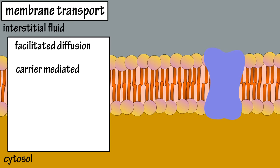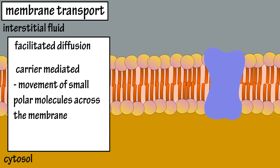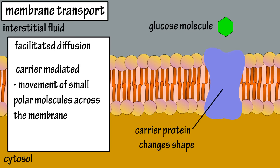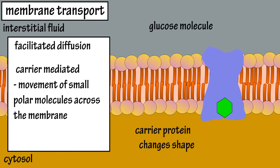Carrier-mediated diffusion involves the movement of polar molecules, such as simple sugars or simple carbohydrates and amino acids, across the membrane. This is accomplished by a carrier protein, which actually changes shape in the process. For instance, glucose binds to a carrier protein, which changes shape and moves the glucose molecule to the other side of the membrane.